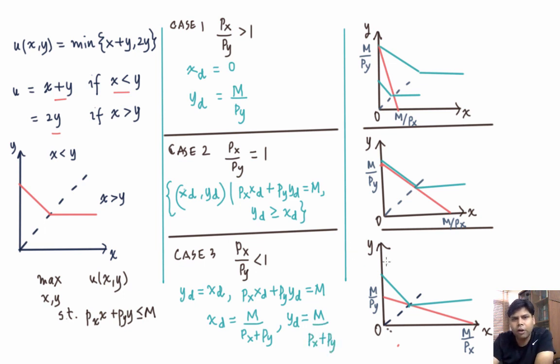So we have learned how to find the demand function for x and y when the utility function is minimum of x plus y comma 2y, and we just used graphs to figure out the demand. So graphical approach is actually a very powerful approach to find the demand function. Thank you.